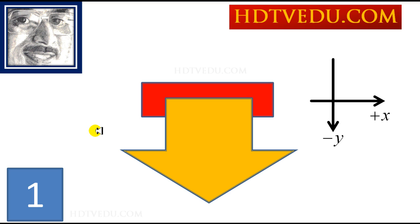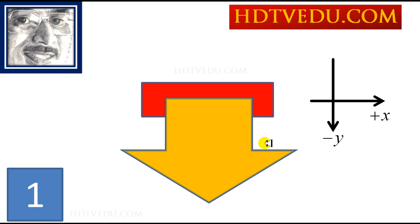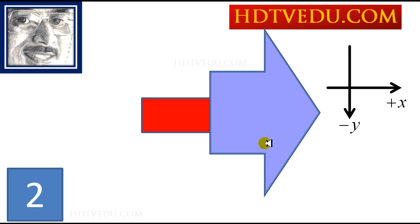For problem number 1, I am going to give you the answer. Here is the object in red. There is a net unbalanced force along negative y — that means net force is along negative y. Net force is along positive x for number 2.